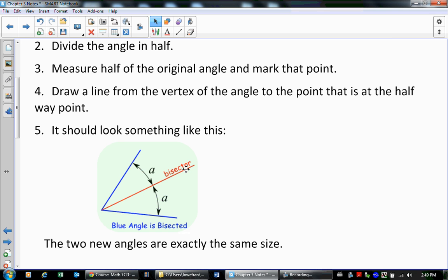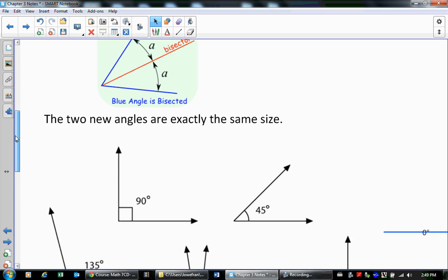And that bisector will cut that angle right in half. So that means this new angle right here is exactly the same size as this angle. So instead of measuring the two new sides, we're measuring the two new angles. Let's take a look at some of these.